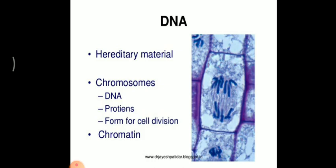Chromosomes are formed by DNA and proteins. They are responsible for cell division. Chromatin is found inside the nucleus, and many chromatins together form a chromosome. Chromatins are arranged in a bundled, ball-like configuration.